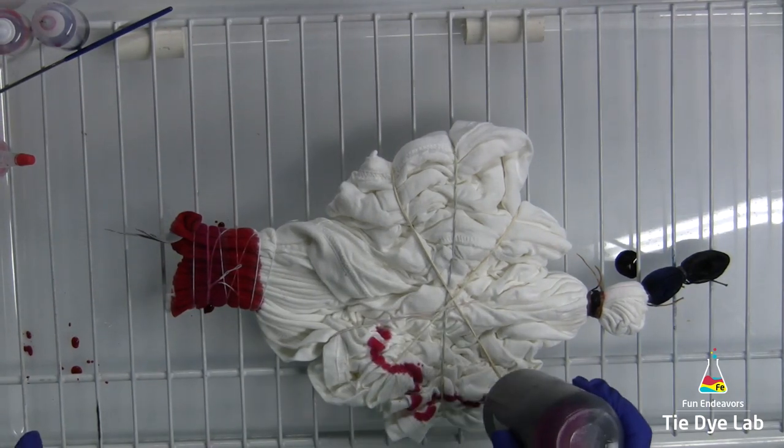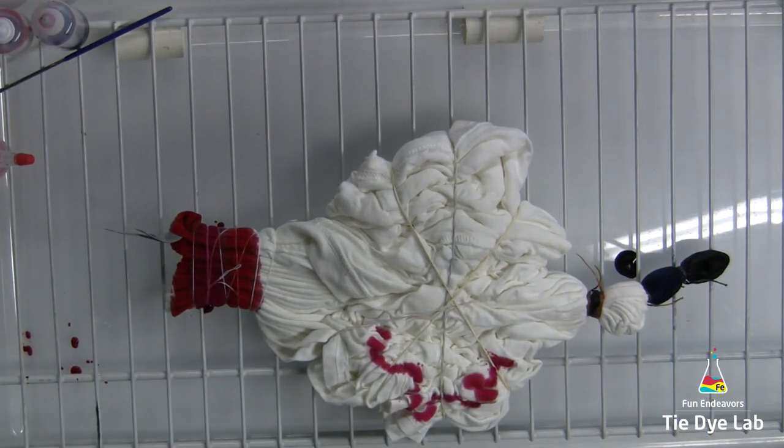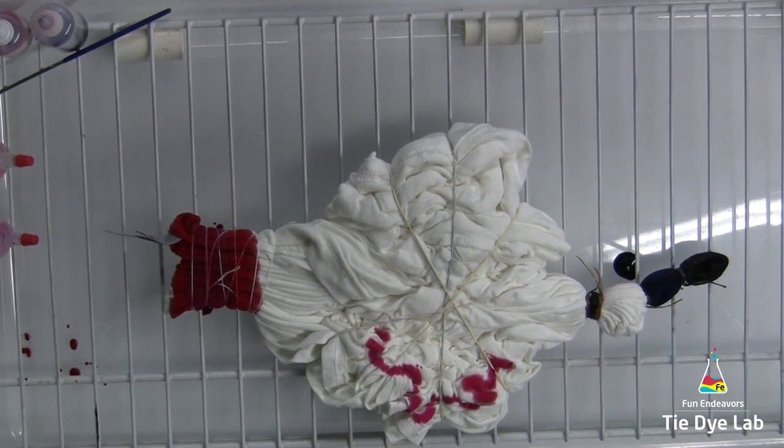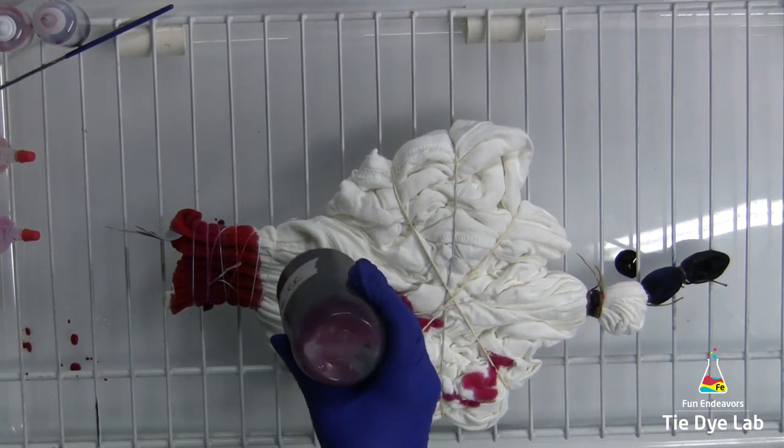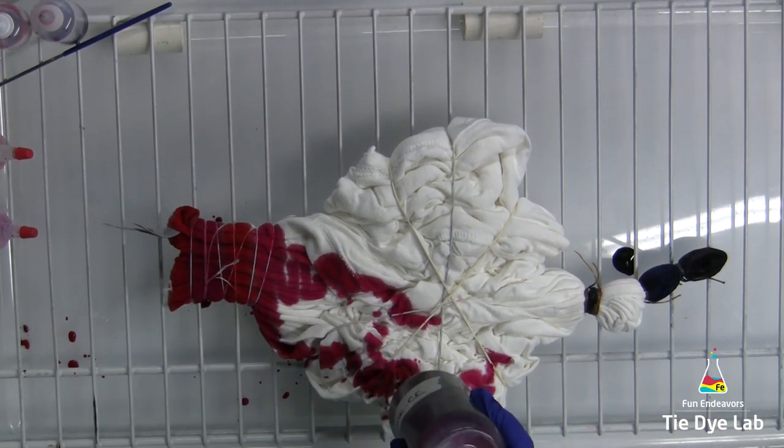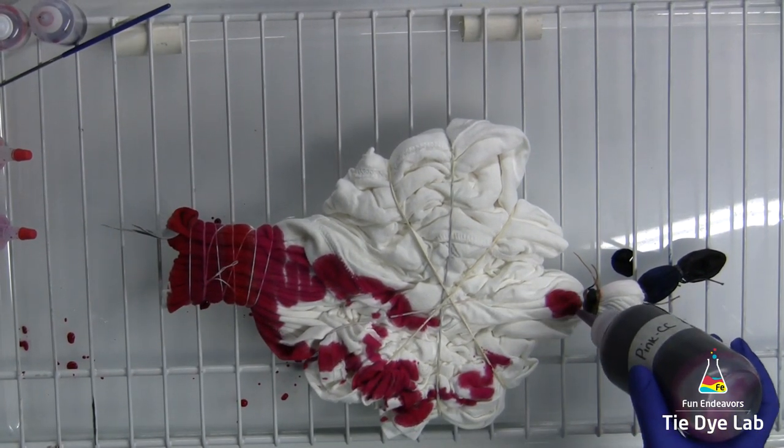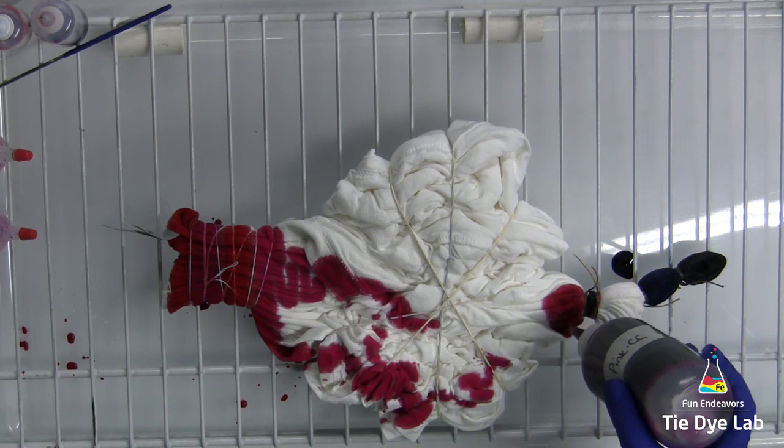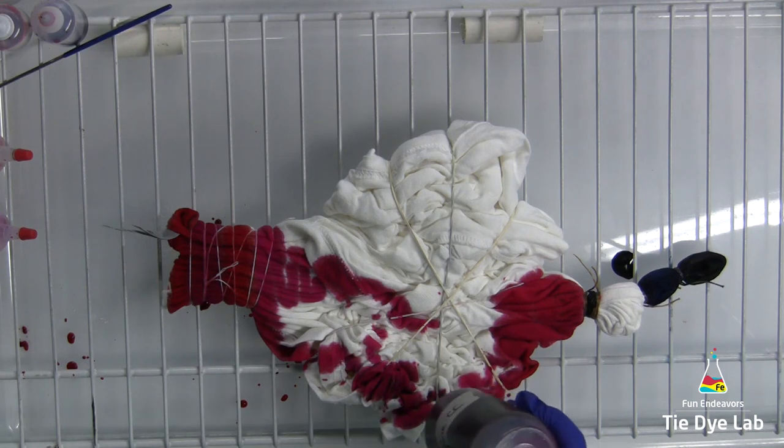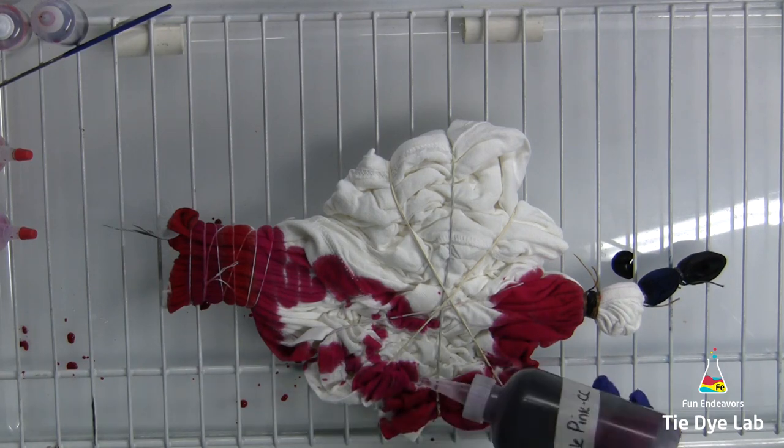On the scrunch portion of the shirt, I'm going to use Wholesale Pink from Custom Colors. I'm trying to watch when I put my Wholesale Pink down close to my eyeball that I don't get any onto the eye area.